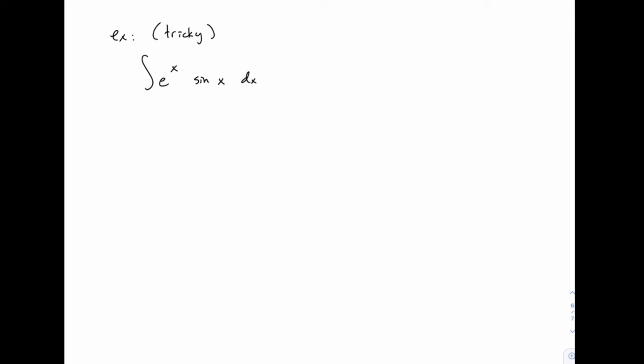So it starts out just like all the others and looks fairly unremarkable. We have two functions, e to the x and sine of x. If we think through LIPTI, we have a trig function sine of x and an exponential function e to the x.